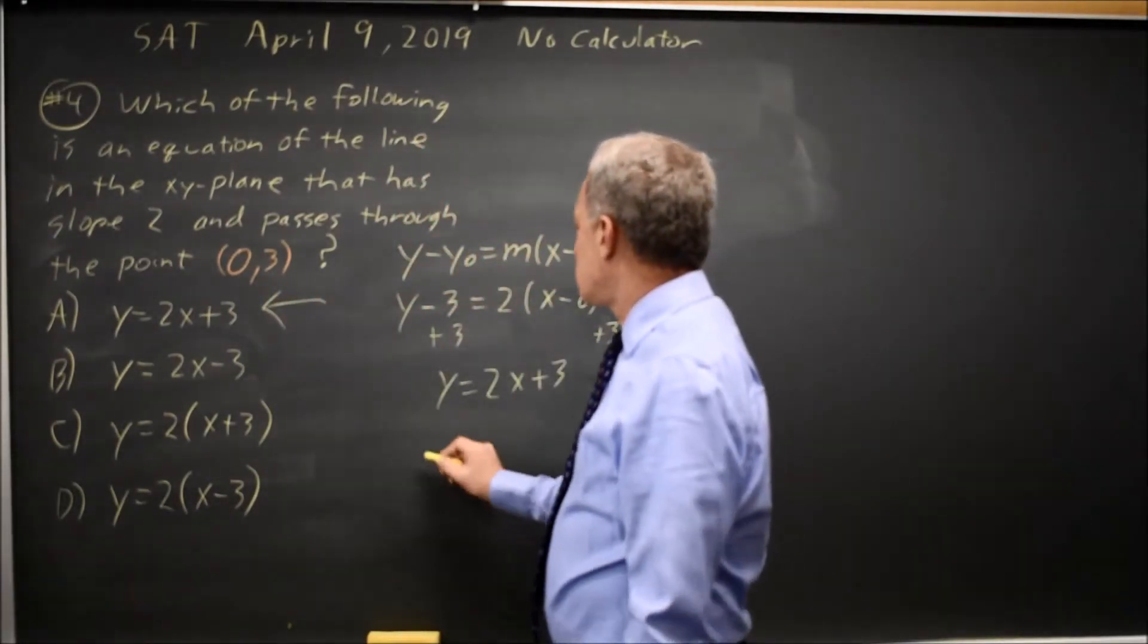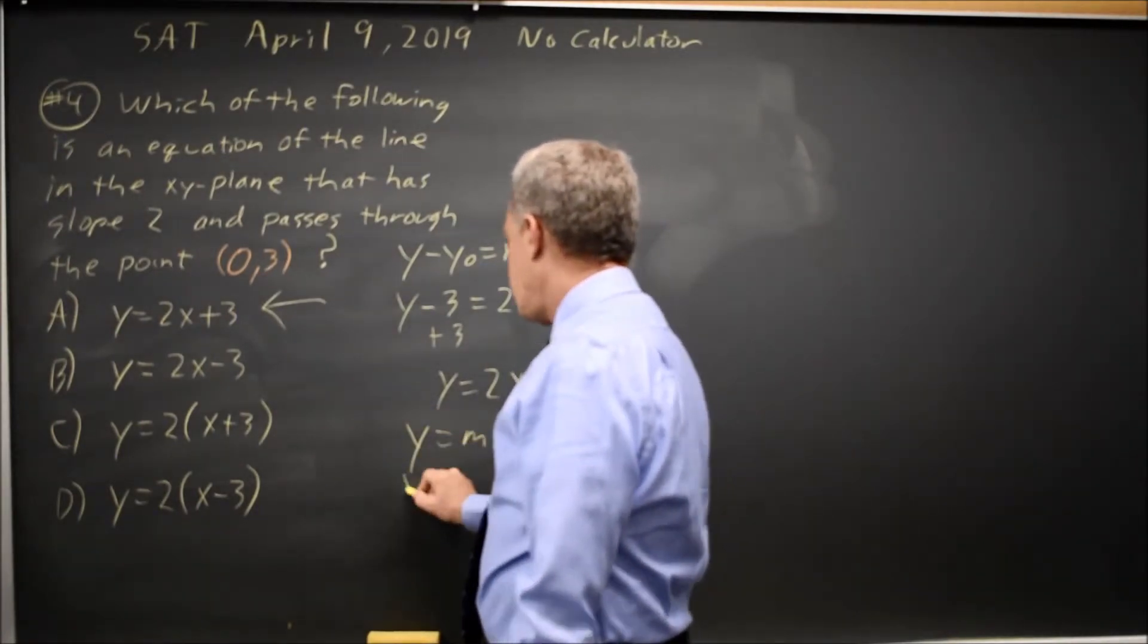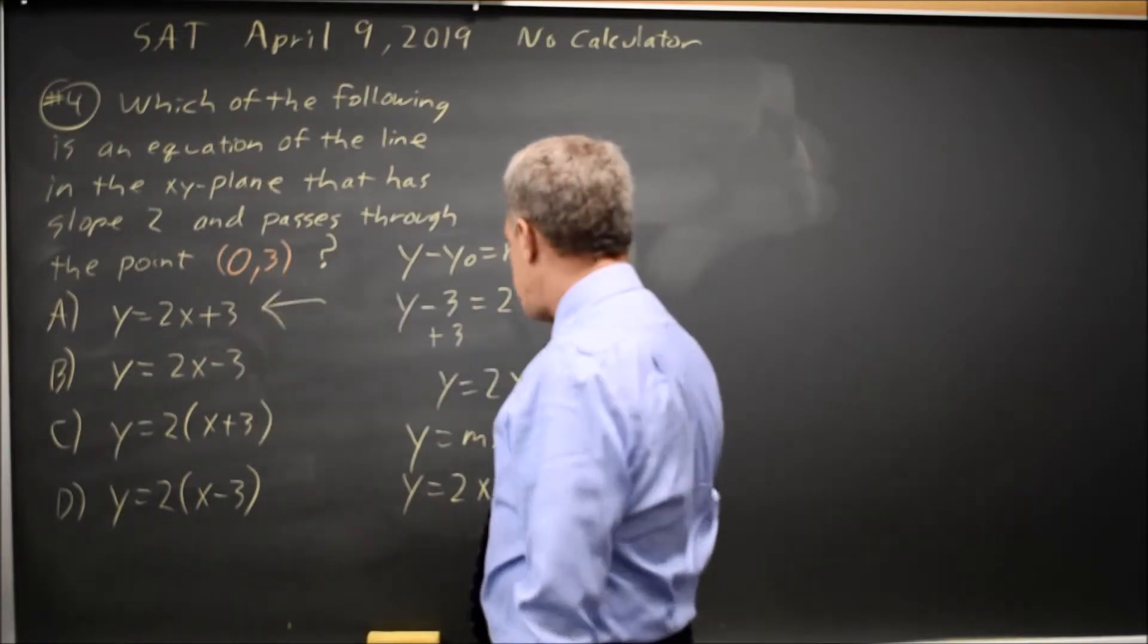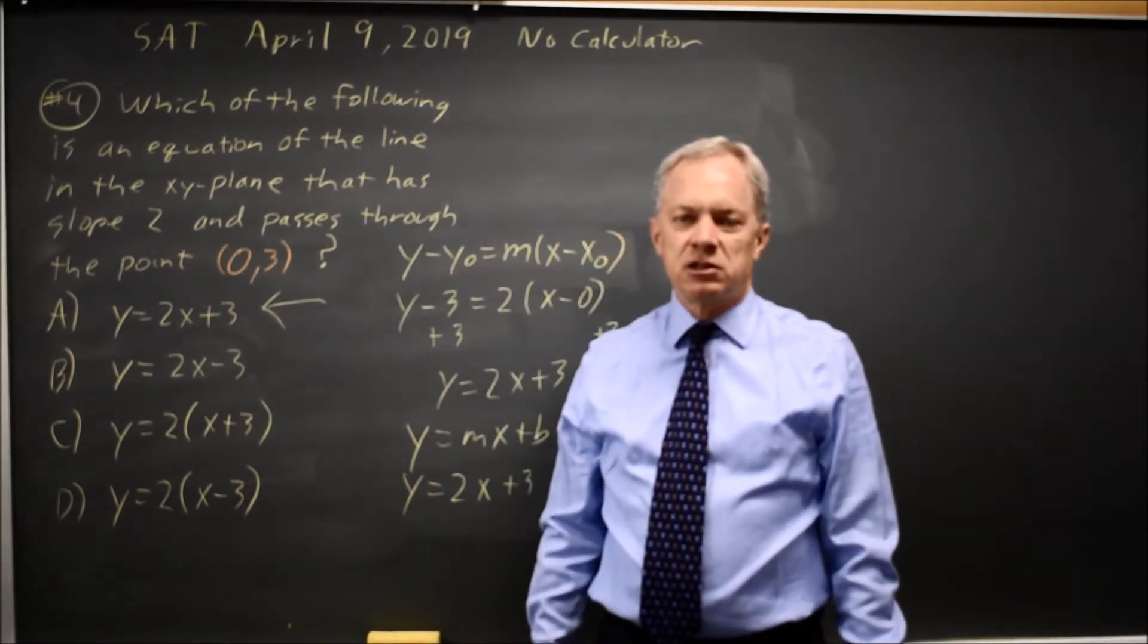Alternatively, since you know y equals mx plus b and they give you m is 2 and they give you b, the y-intercept is 3. That takes you more directly to this form.